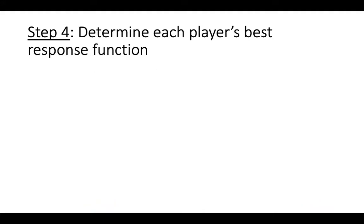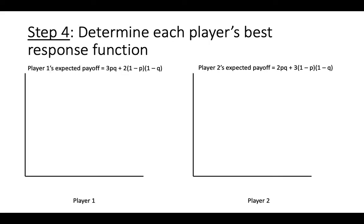The next step is to determine each player's best response function. To do this, we will start by graphing each player's expected payoffs from each of their pure strategies. If player 1 always plays top, then p equals 1, and player 1's expected payoff is 3 times q.